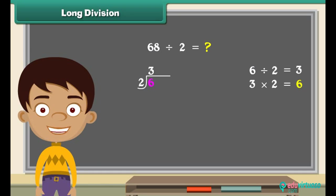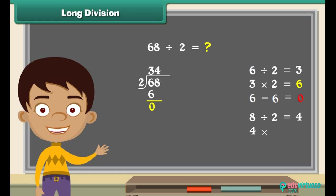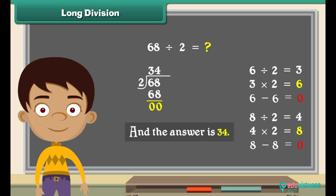Now multiply the three and two and put the answer right under the six. Now we do subtraction: six minus six is equal to zero. We carry down the second number. Now we will divide eight by two. Eight divided by two is four, so we put that four right above the eight. Multiply the four and the two and put the answer right under the eight. Do the subtraction: eight minus eight is equal to zero. We ended with a zero at the bottom, and the answer is thirty-four.